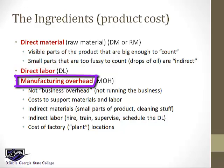Manufacturing overhead includes quite a few costs. The indirect materials are very tiny stuff. Indirect labor is the cost to hire, train, supervise, and schedule — in other words, managing the direct labor. And then all the costs of the factory: utilities, security, fans, rent, depreciation — anything having to do with the factory.